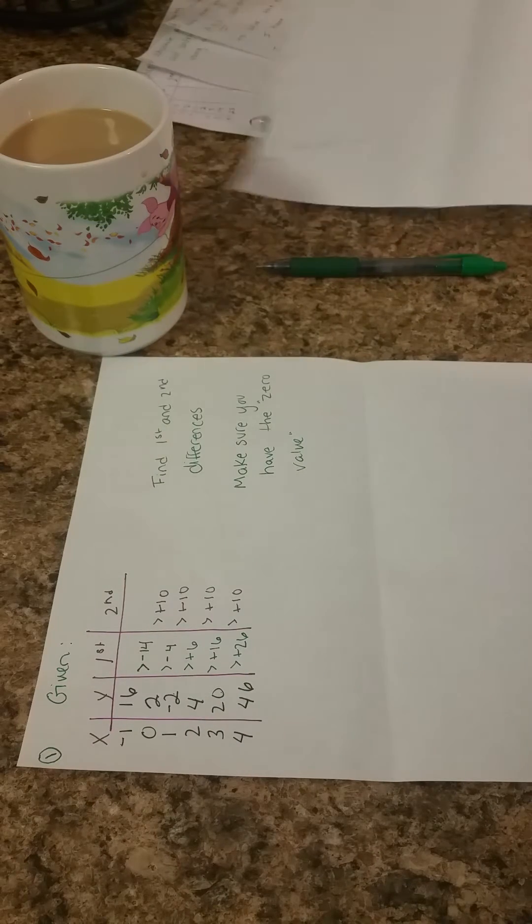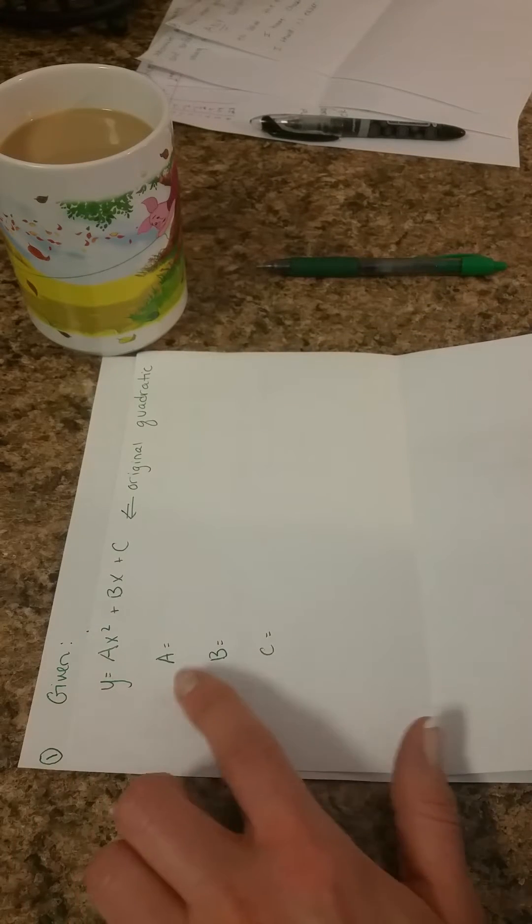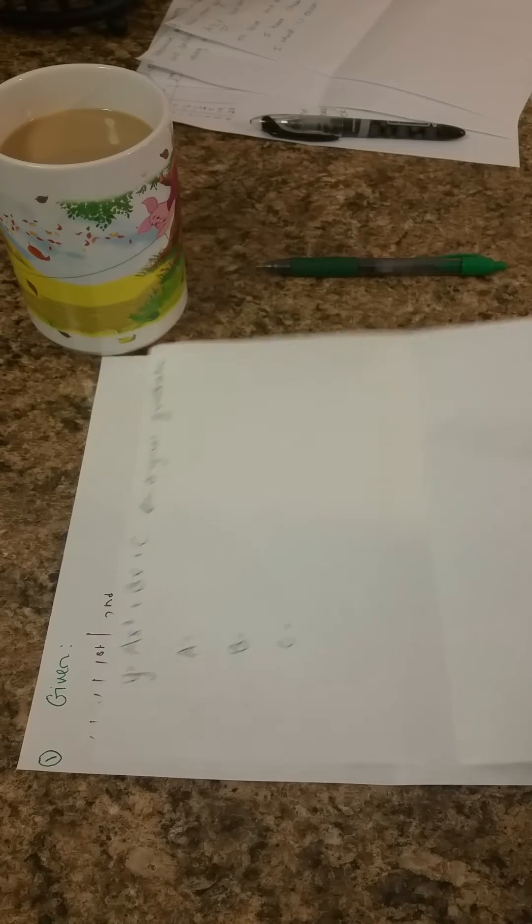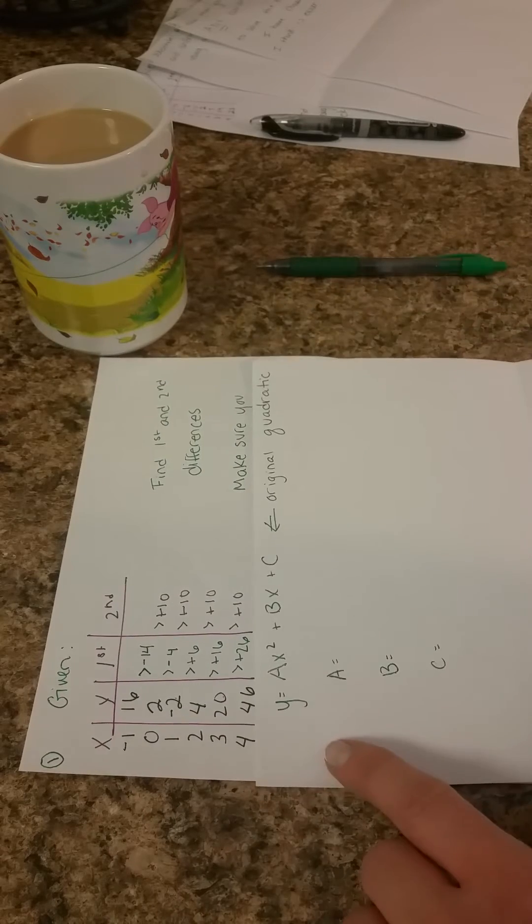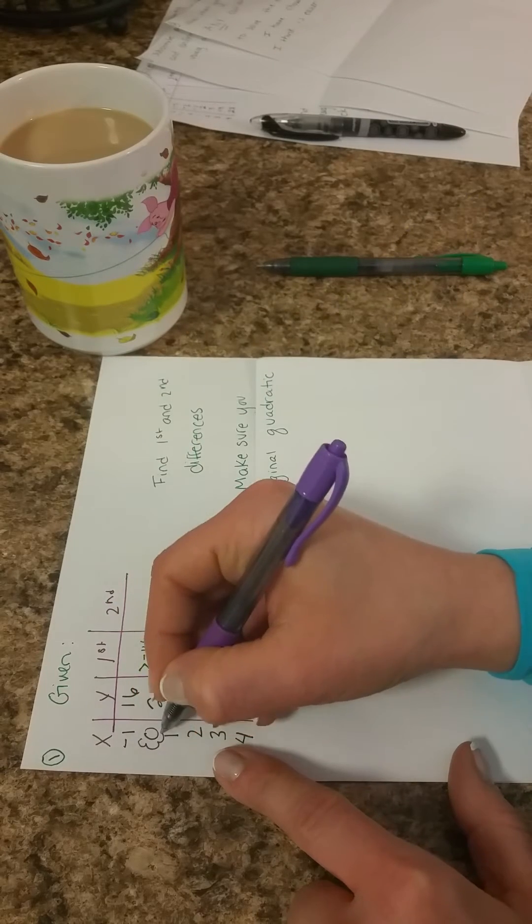Second thing you need to do, I'm going to go back to that original sheet that was requesting our A, B, and C. Your C value is just your zero value. So I'm going to put a little cloud around this, zero, two.